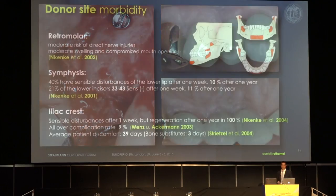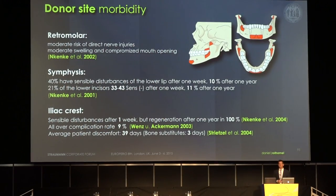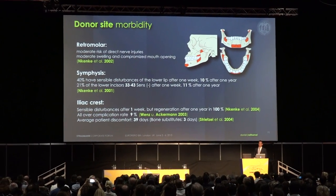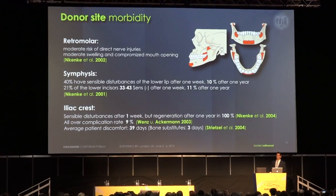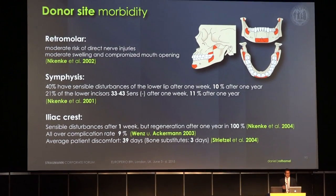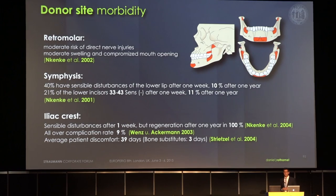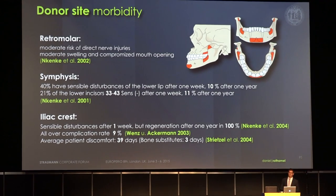When we ask our patients, we have the problem that patients are complaining. Whenever we use autografts — whether from the chin or the ramus region — a lot of patients complain more about the donor site than the acceptor site. We have a moderate risk of nerve injuries; one in ten patients suffers long-term sensory disturbances of the lower lip or lower incisors from the chin region. With iliac crest grafts, many patients have problems walking — the average patient discomfort is 39 days for hip grafts compared to just 3 days for bone substitutes.